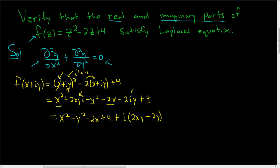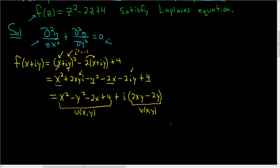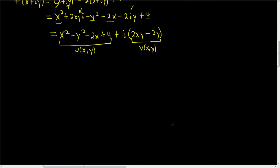Grouping all the real terms, we get x squared minus y squared minus 2x plus 4. Factoring out an i from the remaining terms gives plus i times 2xy minus 2y. So u of xy is the real part of f, and v of xy is the imaginary part of f. All we have to do now is show that Laplace's equation holds for both u and v.